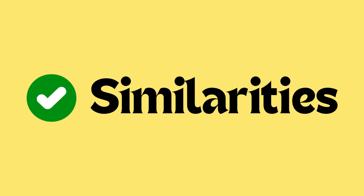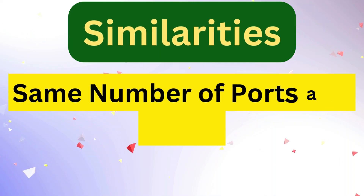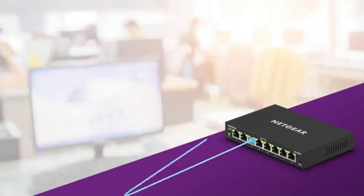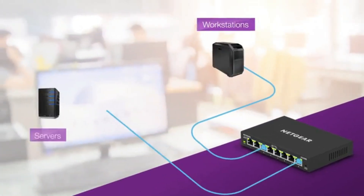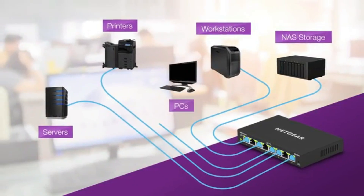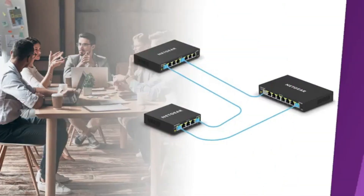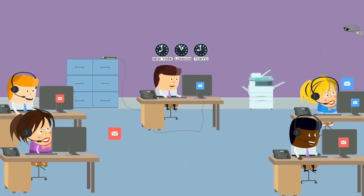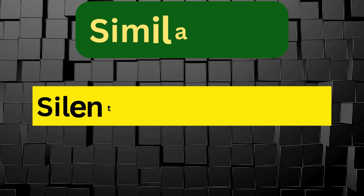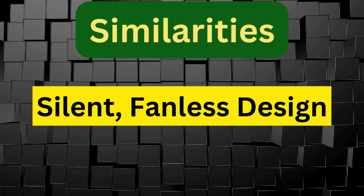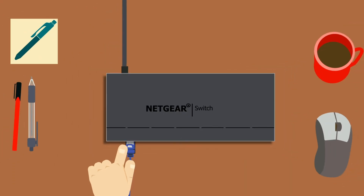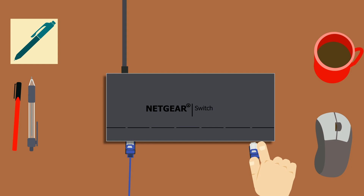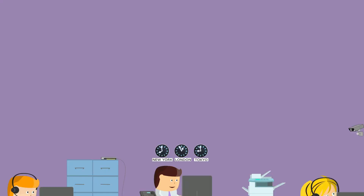Similarities: Same Number of Ports and Speed. Both the GS305 and GS305e come with 5 gigabit Ethernet ports, providing fast data transfer speeds up to 1 gigabit per port. This makes them suitable for home and office use where high-speed wired connections are needed for desktops, printers, NAS, and more. Each switch also features a fanless metal housing ensuring silent operation, making both models ideal for noise-sensitive environments such as bedrooms, home offices, or studios.